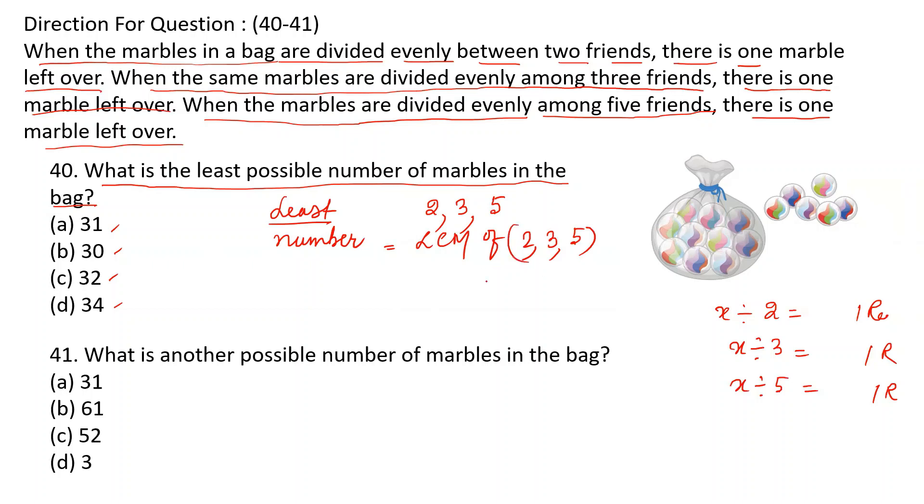This is just the product of this because they don't have any common factor. Now this 30 is divisible by 2, 3, 5. Now coming to remainder, remainder will be one in each case. So 30 plus 1, 31 is the answer. Answer is A, 31.